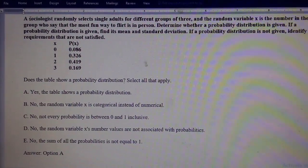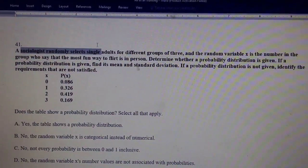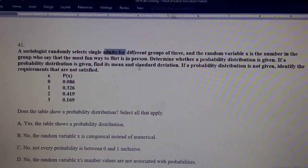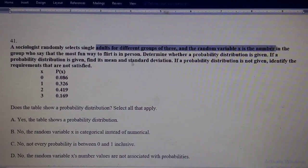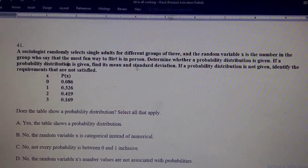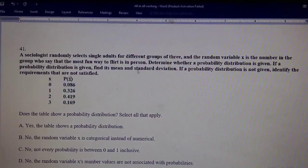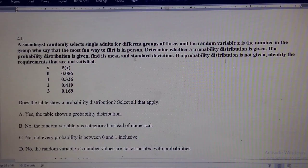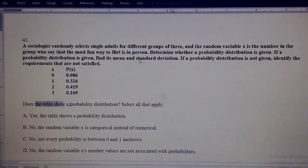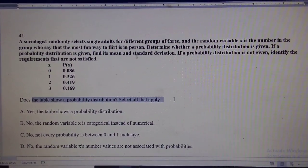A sociologist randomly selected different groups of people. Three random variables and the probabilities are arranged in this way. Does the table show a probability distribution?